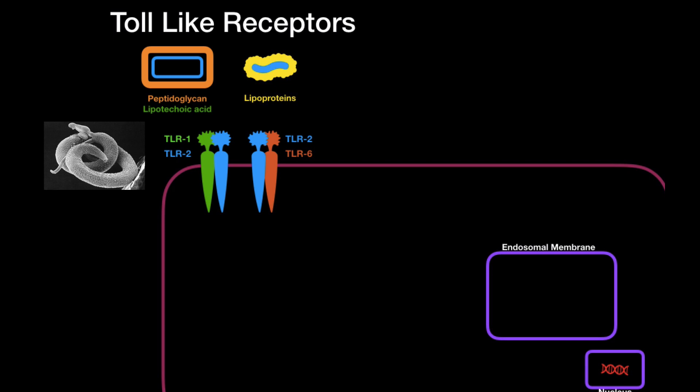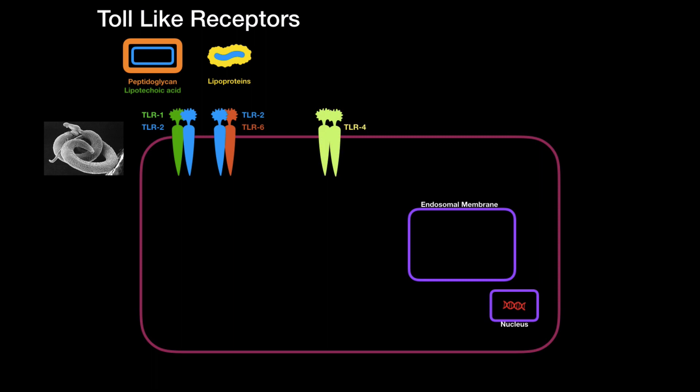Toll-like receptor 2 are very good at recognizing a structure called zymosan on fungi. Toll-like receptor 4, however, dimerizes with itself, and is very good at binding lipopolysaccharide on gram-negative bacteria. What's interesting though, is that many bacteria can escape this mechanism by producing proteins, or what we call lipopolysaccharide mutants, that interfere with toll-like receptor signaling, like Yersinia pestis for example. This bacteria is responsible for the plague.